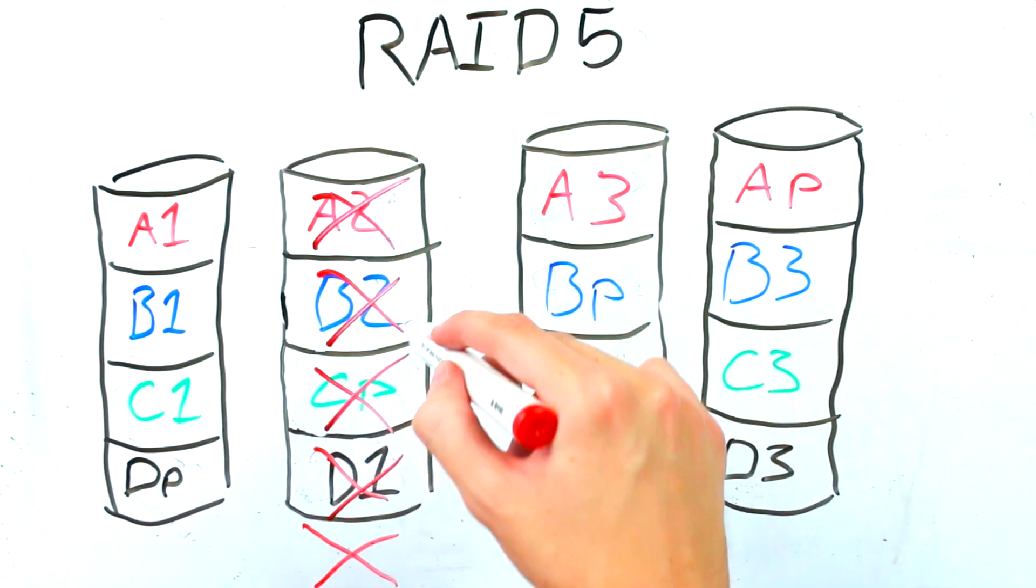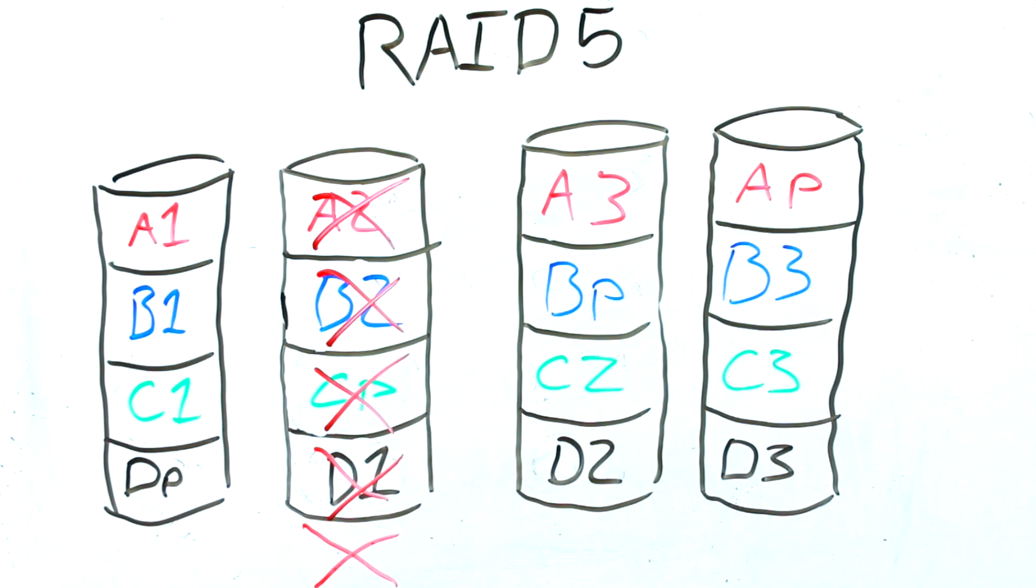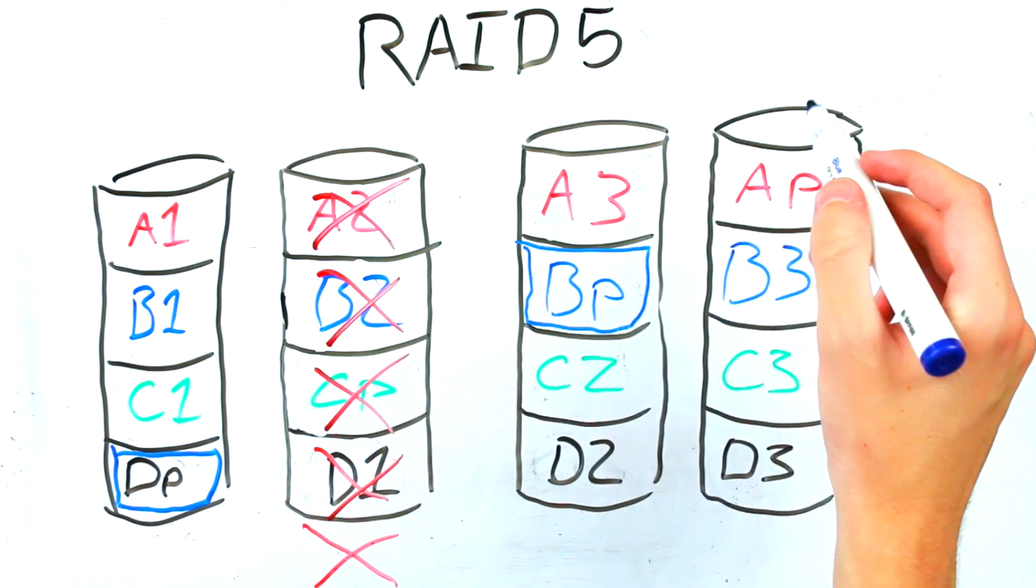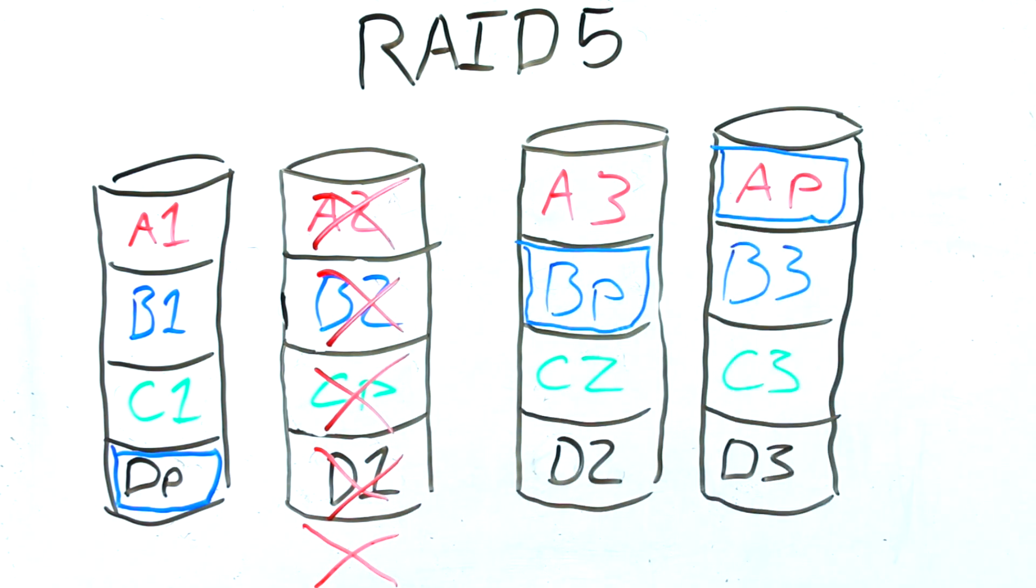So for example if disk 2 fails and you lose the data from block A2, B2 and D2, you can use the compressed data stored in the corresponding parity blocks on the other disks to recover the lost data.